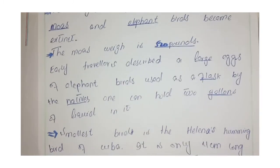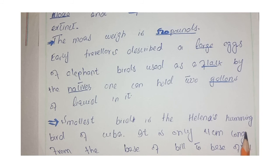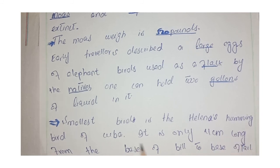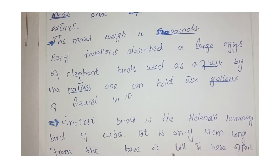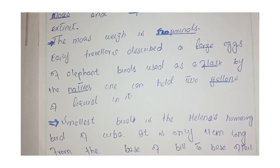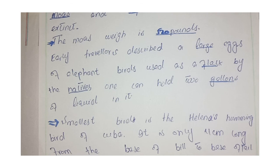The smallest bird is Helena's hummingbird of Cuba. It is only 4 cm long from the base of the bill to the base of the tail — the total length from beak to tail is only 4 cm.